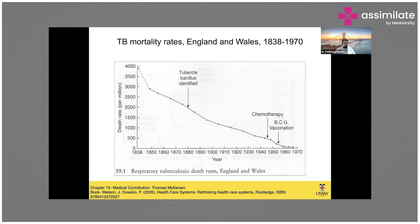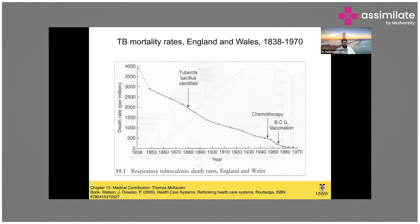Before we go through the treatment strategies and why India is struggling with TB elimination, I want to spend a moment on this slide showing death rates in England and Wales between 1838 and 1970. You can see the death rates have been drastically reduced — the steeper the curve, the higher the decrease — and you can see the curves declining rapidly from 1850 to the 1940s–60s.